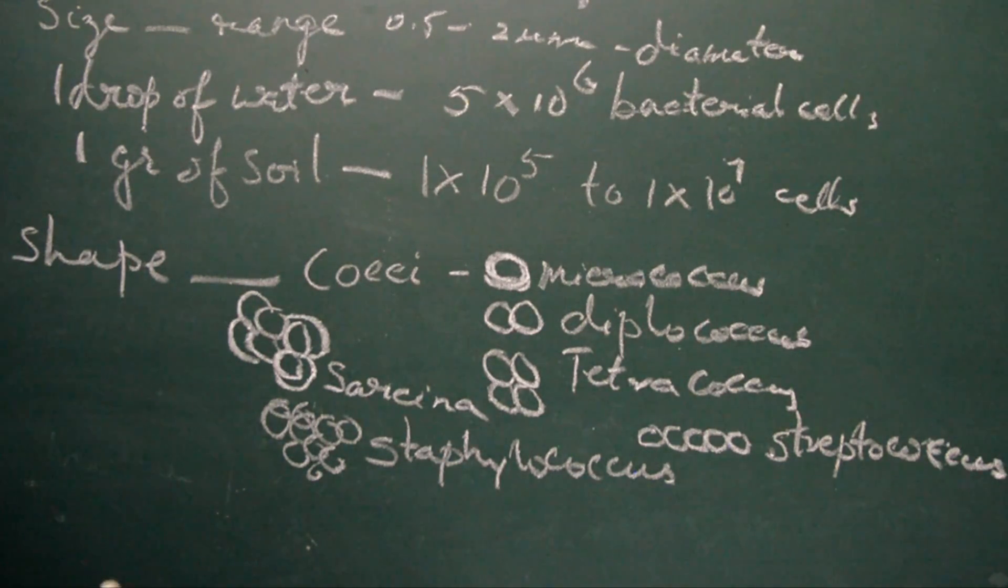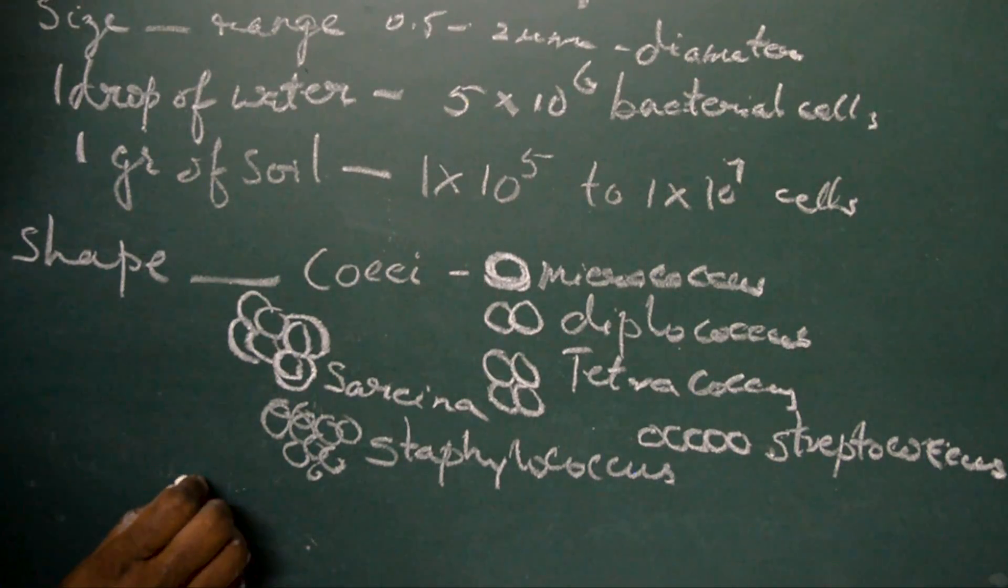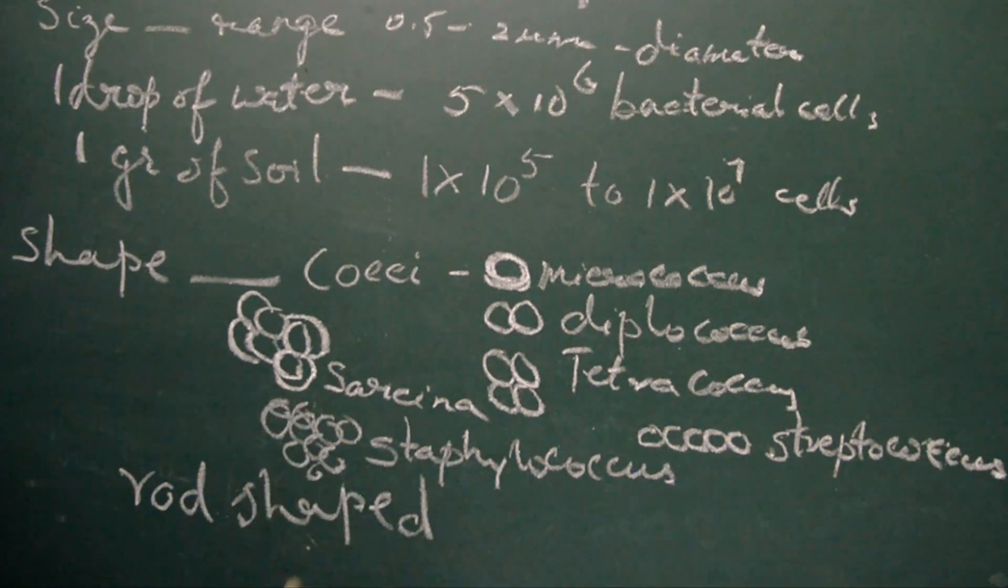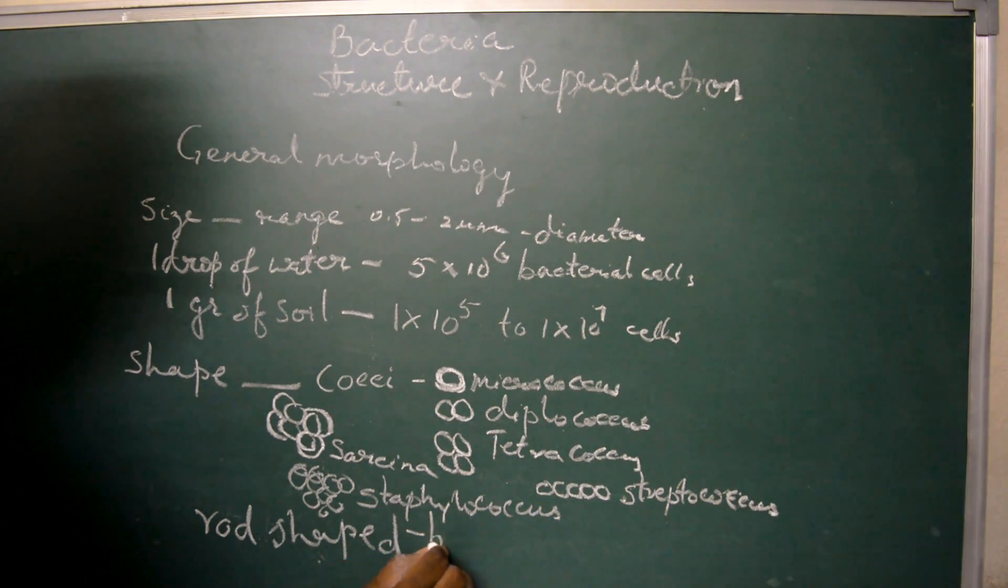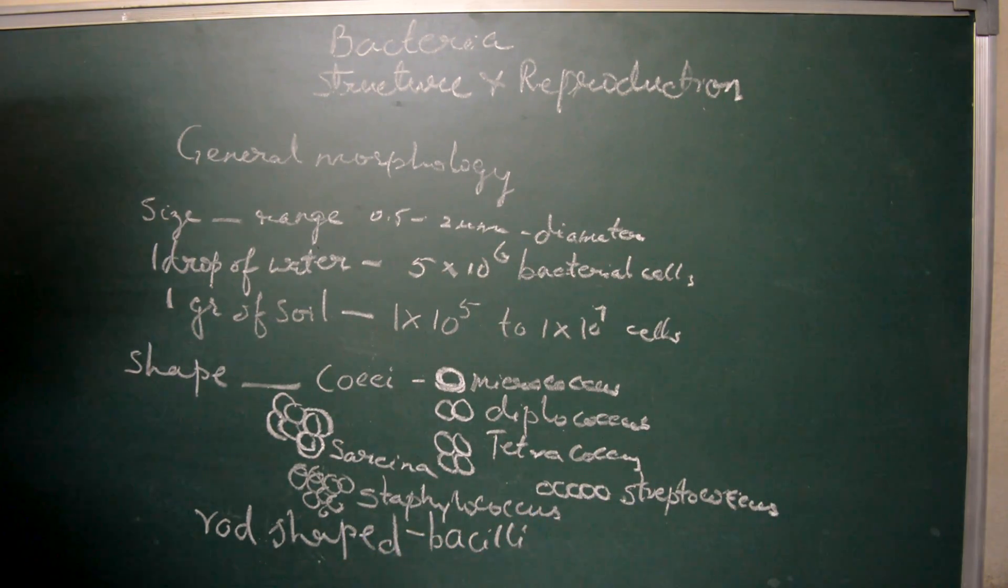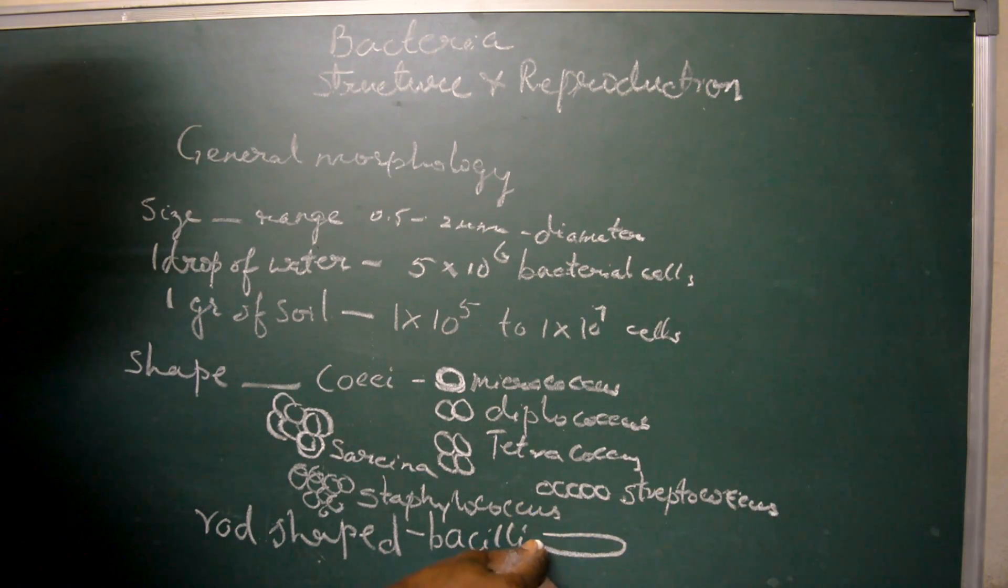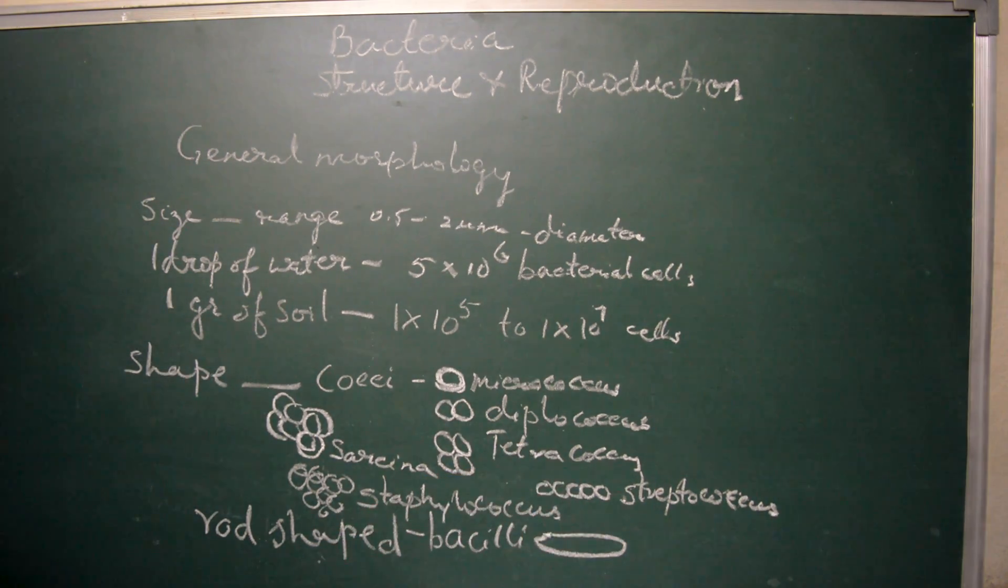The next shape which can be discussed is the rod-shaped bacteria which is called the bacilli form, elongated rod-shaped bacterial structures. Even in bacilli form we have monobacillus, diplobacillus, or streptobacillus forms.